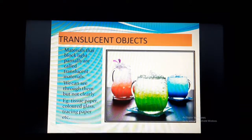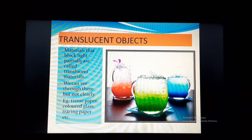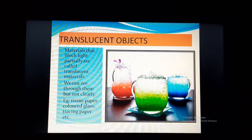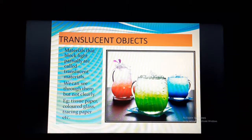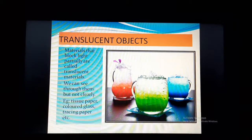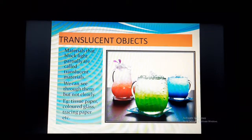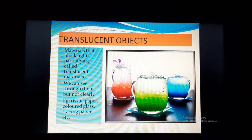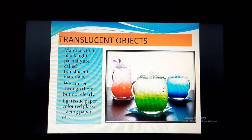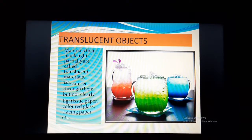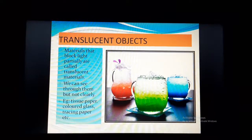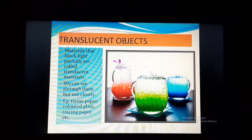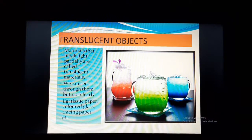We can see through translucent objects, but not clearly. Through transparent objects we can see clearly, but through translucent objects we cannot see clearly. Examples are tissue paper, colored paper, and tracing paper — a type of paper that is not totally transparent. Even some types of plastic bags are translucent in nature, meaning light can pass through them but not completely. You also have to learn the differences between transparent, translucent, and opaque objects, as it can come in your exam in different ways.